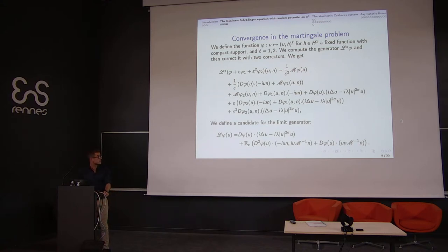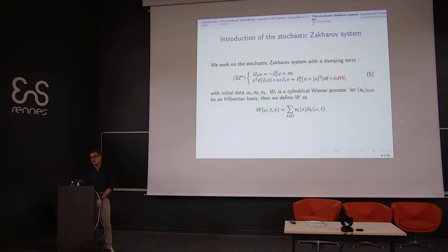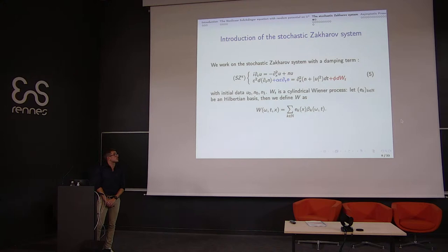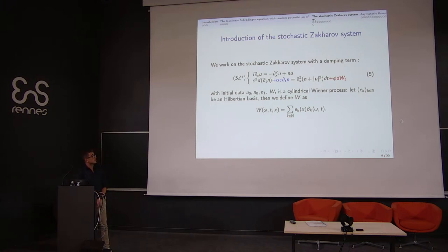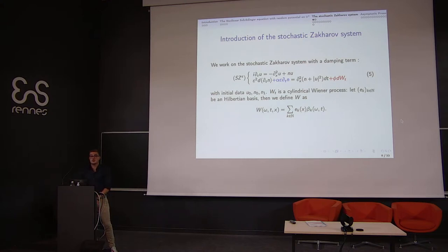I will now give more detail on this method for the second problem of my thesis, which is the stochastic Zakharov system. This system has two unknowns: the function u, solution of a Schrödinger equation, and the function n, solution of a wave equation. The red term denotes the stochastic perturbation with phi a regular raising operator and W a stochastic Wiener process, and the blue term denotes an additional damping term, which will be crucial when we study the limit as epsilon goes to zero.